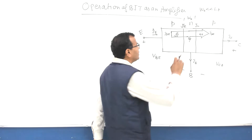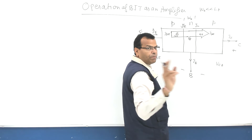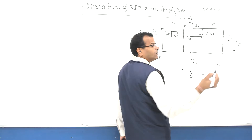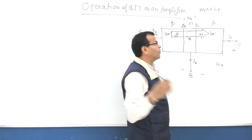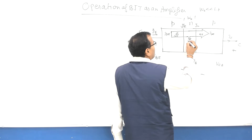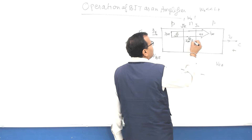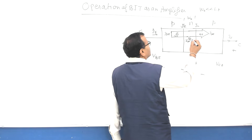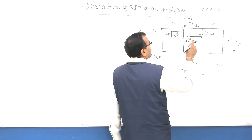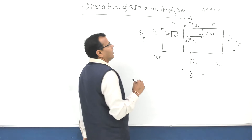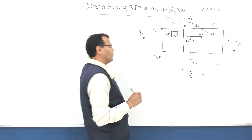This will be constituting the base current, and that is because of the recombination. So I will say this is IPE minus IPC — that's what you have.